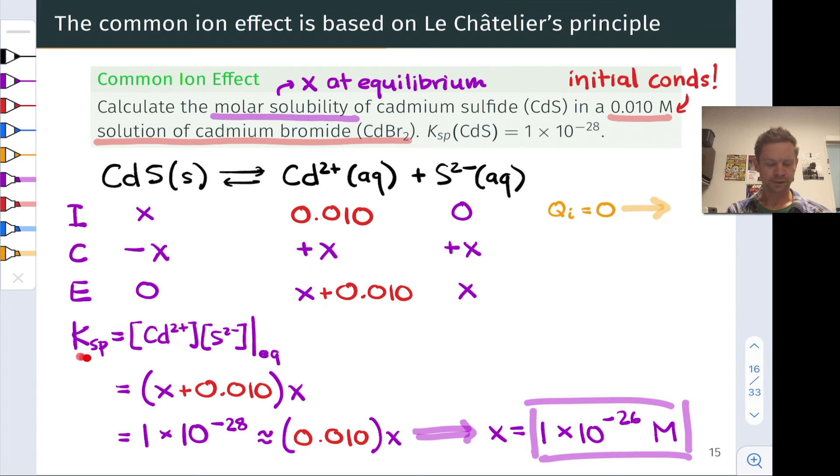Well, in that case, we would end up with Ksp equals x squared, since there would be no cadmium present in the solution initially. This portion of the ICE table, this cell of the ICE table if you like, would be equal to zero.